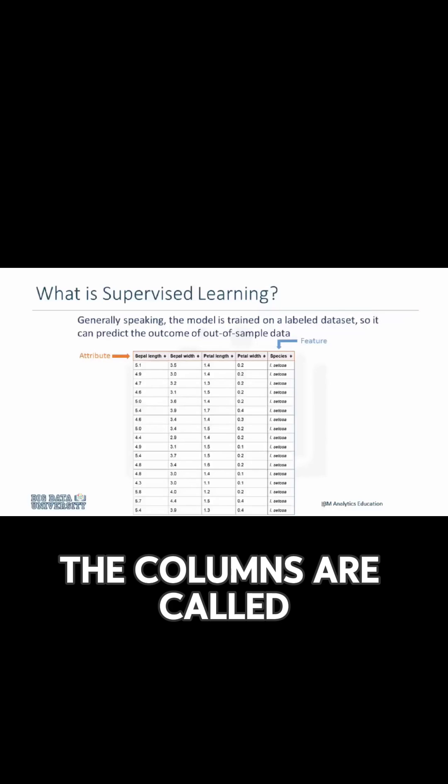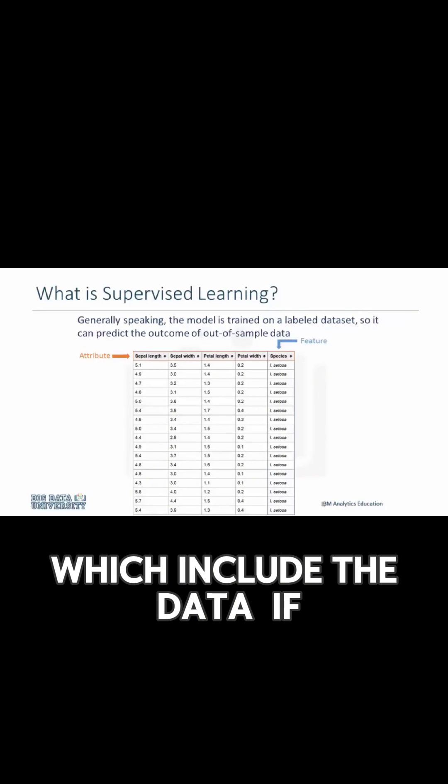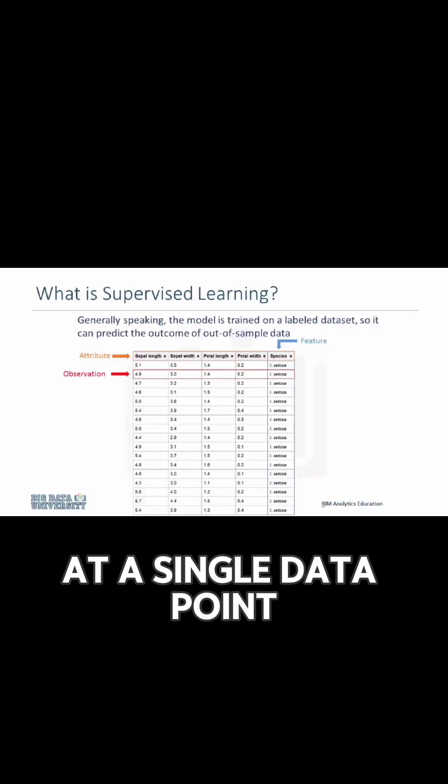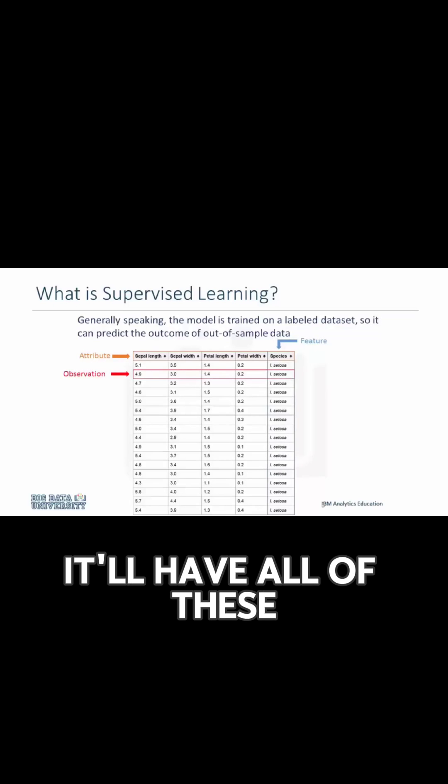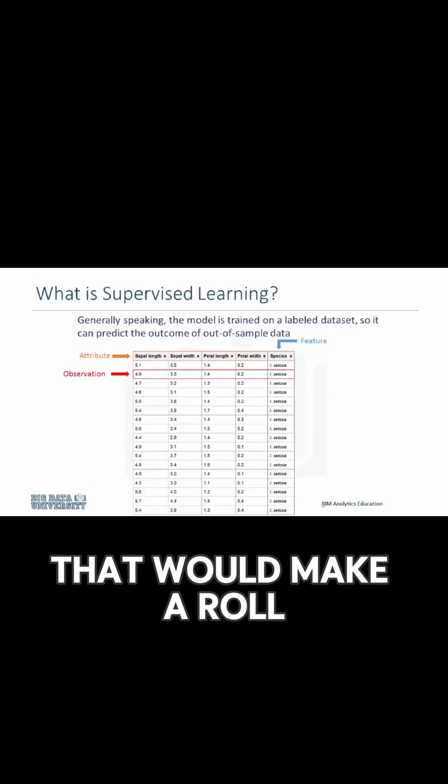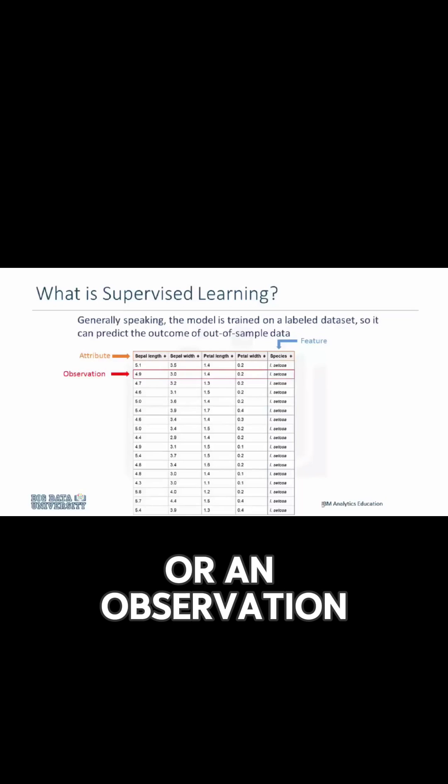The columns are called features, which include the data. If you look at a single data point on a plot, it'll have all of these attributes. That would make a row on this chart or an observation.